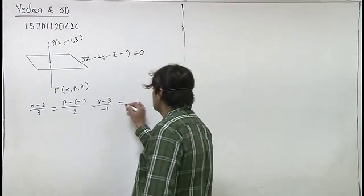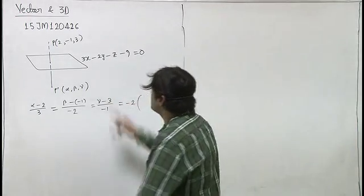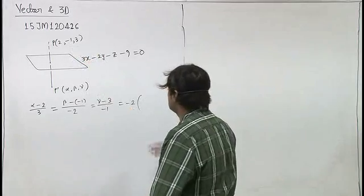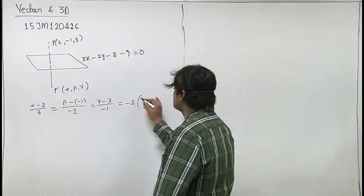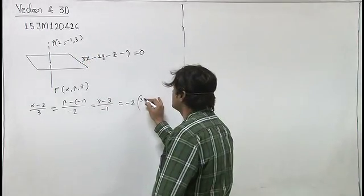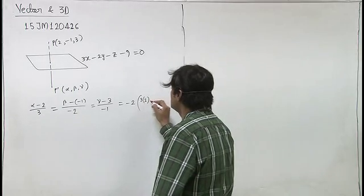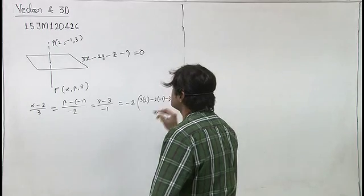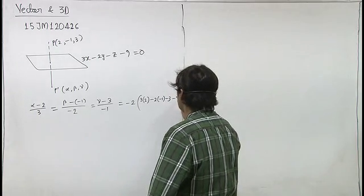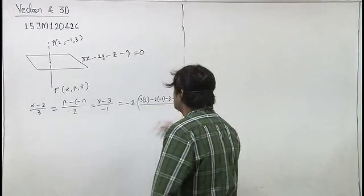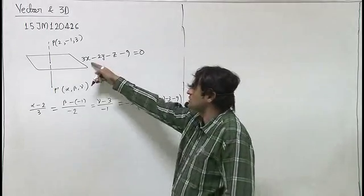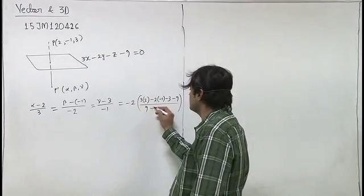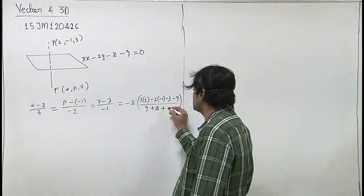c is minus 1 equal to minus twice. Now we'll put the point here, so this is 3 into 2 minus 2 into minus 1 minus 3 minus 9 upon a square plus b square plus c square. a square is 9, b square is 4 and c square is 1.